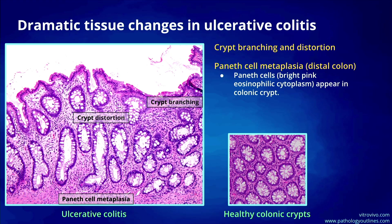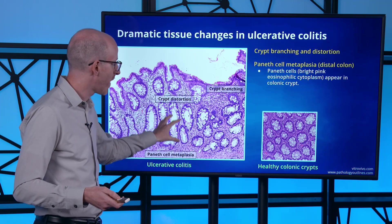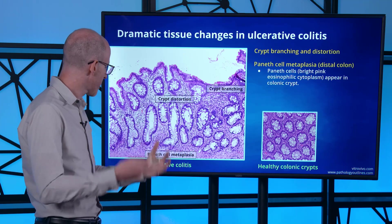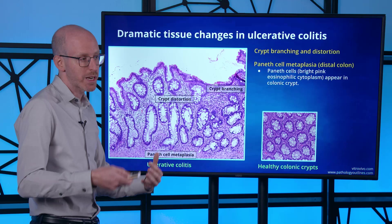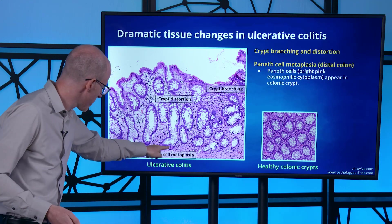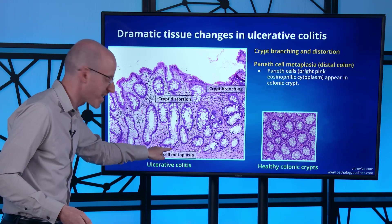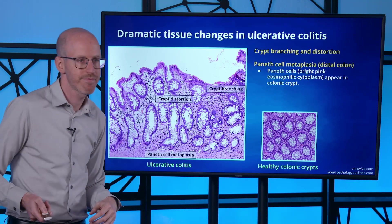We also see Paneth cell metaplasia. A Paneth cell is a cell type that normally lives near intestinal stem cells and protects them against microbes. Normally these cells are not found in the distal colon, but during ulcerative colitis this metaplasia occurs and the cell type appears. You can see this, if you look closely, as a bright pink color — a telltale sign that a Paneth cell is present.